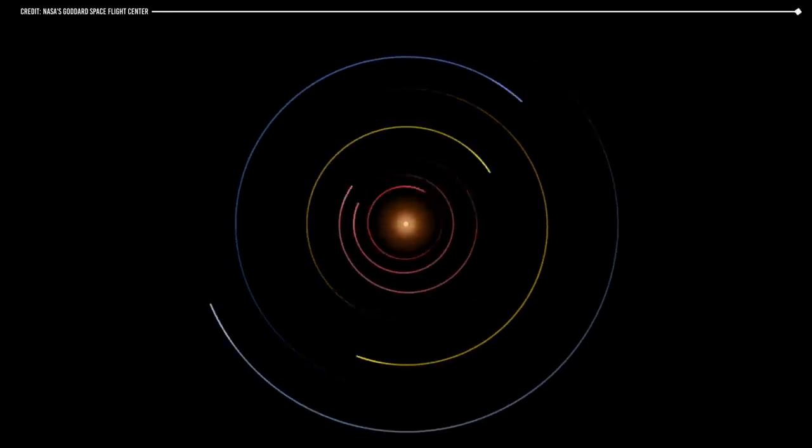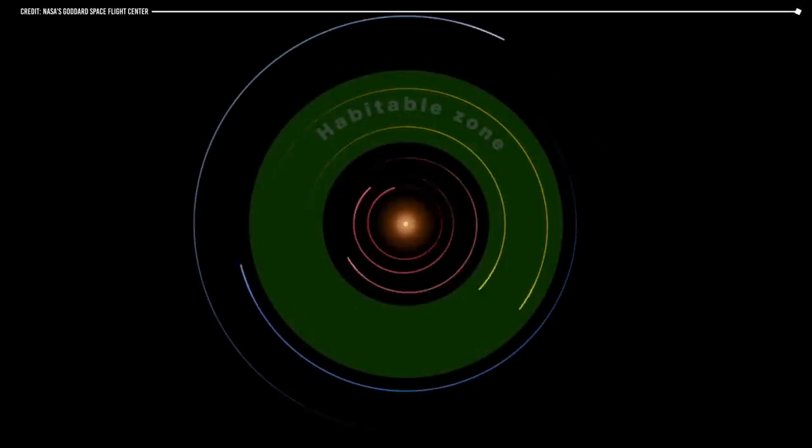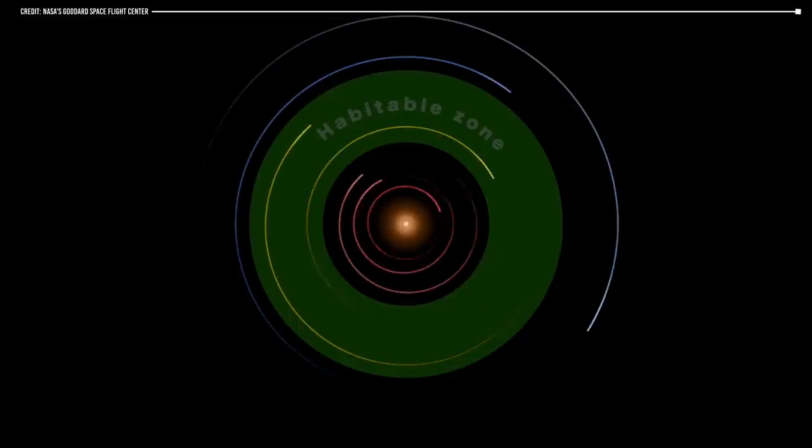In fact, some red dwarfs have habitable zones that are so close to the star that a planet in this zone would orbit the star in just a few days.